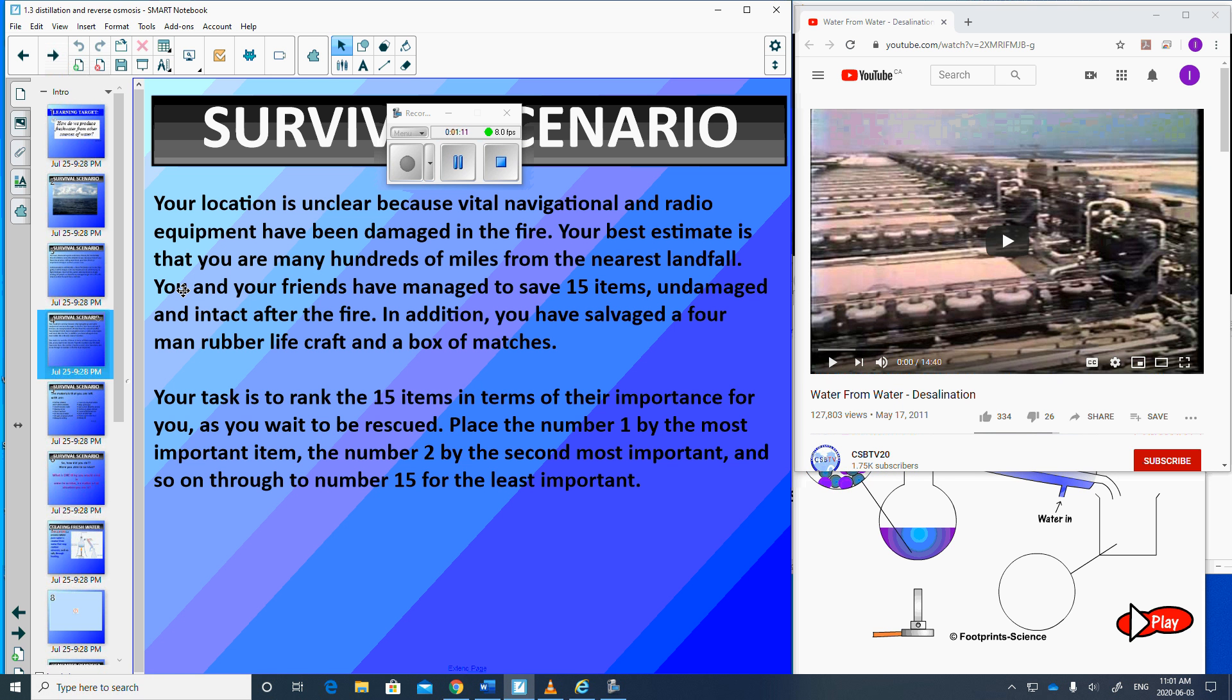You and your friends have managed to save 15 items undamaged and intact after the fire. In addition, you've salvaged a four-man rubber life craft and a box of matches. Your task is to rank the 15 items in terms of their importance for you as you wait to be rescued. Place the number one by the most important item, number two by the next, etc., down to number 15 for the least important.